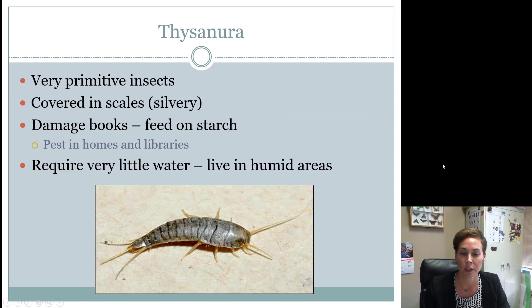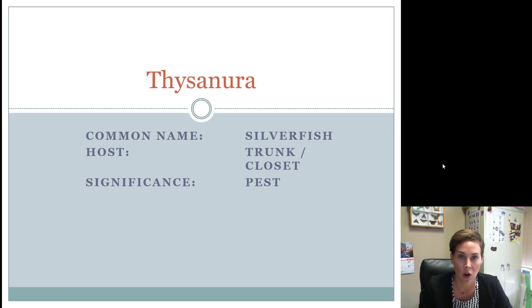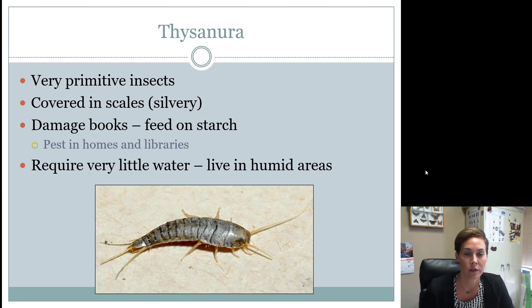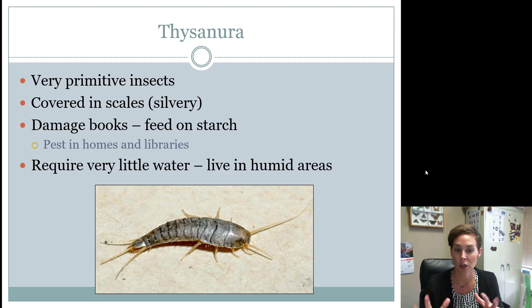The first order is Thysanura — all the silverfish. Another name for silverfish in this group is bristletail. They are considered a pest. Their host or location is inside the house; they like humid places like trunks or closets. They're really primitive insects — their body is covered with scales, so if you've ever touched a silverfish it leaves a gray soot on your hands. They're a pest because they feed on starch, including the glue and binding of books and magazines, damaging books and libraries.